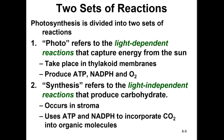Photosynthesis consists of two sets of reactions. The 'photo' in photosynthesis refers to the light-dependent reactions that capture energy from the sun; they take place in the thylakoid membranes and produce ATP, NADPH, and oxygen. 'Synthesis' refers to the light-independent reactions that produce carbohydrate; this occurs in the stroma and uses ATP and NADPH to incorporate CO2 into organic molecules.